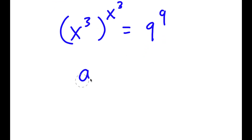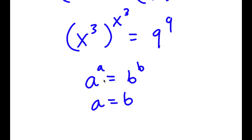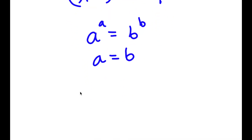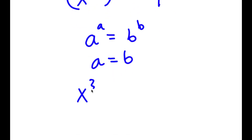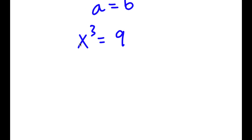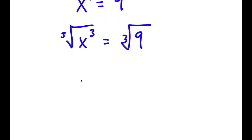Now, if I have something in the form a to the power of a equals b to the power of b, this means a equals b. So in this case, x to the power of 3 is equal to 9. To solve this, I take the cube root on both sides. The cube root of x to the power of 3 is x, so I have x is equal to the cube root of 9.